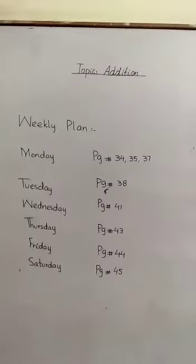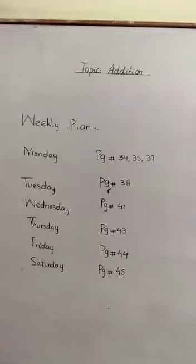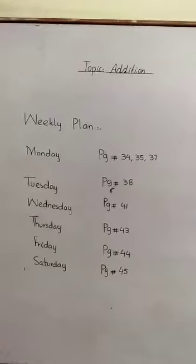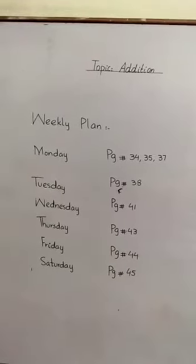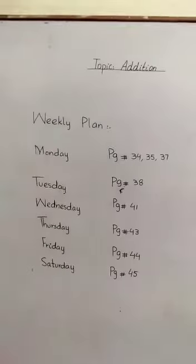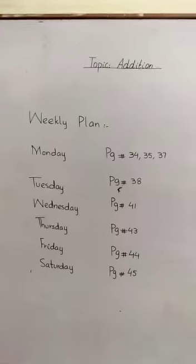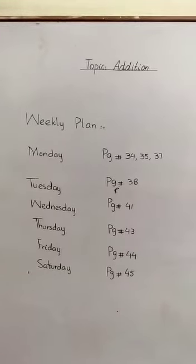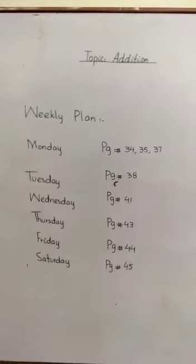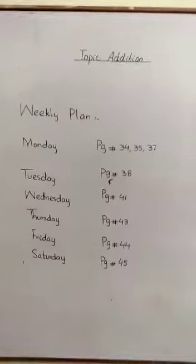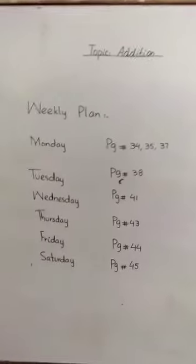Monday: page number 34, 35, 37. Tuesday work is page number 38. Wednesday work: page number 41. Thursday work is page number 43. Friday work: page number 44. And Saturday work: page number 45.